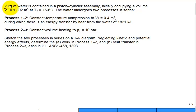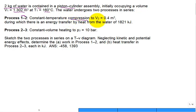For this problem we have two kilograms of water contained in a piston-cylinder assembly. Initially it occupies a volume of 1.302 meter cubed at a temperature of 160 degrees C. The water undergoes two processes in series. The first process from state 1 to state 2 is constant temperature compression, with a final volume of 0.4 meter cubed, during which there is an energy transfer by heat from the water of 1821 kilojoules.